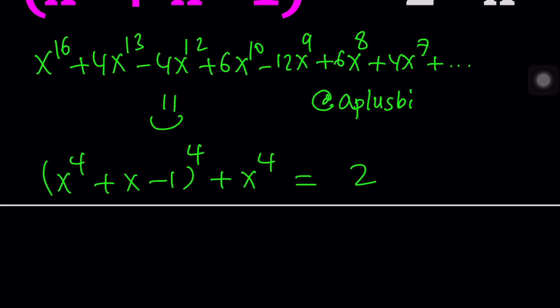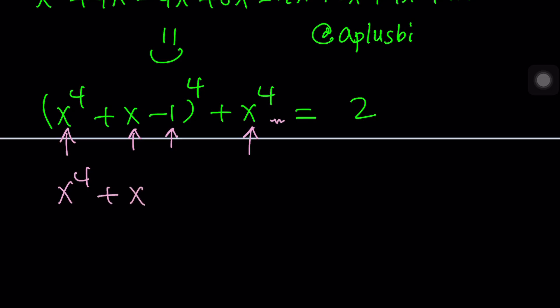But notice that as soon as I added x to the fourth power, that should ring a bell. Notice that we have an x to the fourth power here and we have an x to the fourth power here. We also have a fourth power on the outside. But x to the fourth is not by itself. If you focus inside the parentheses, x to the fourth is followed by x minus one. So that's what we're missing here. We're gonna go ahead and add x minus one to both sides.